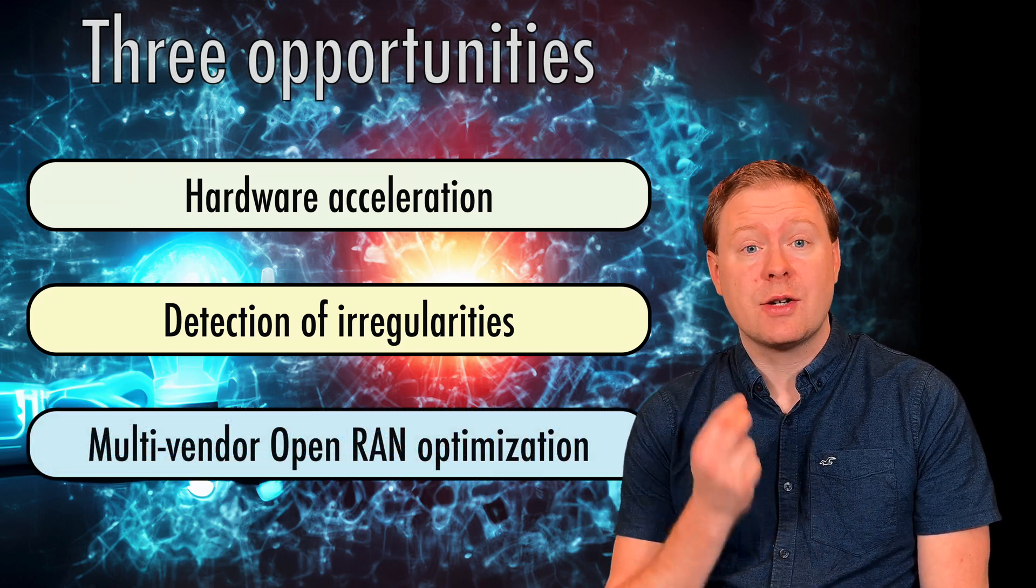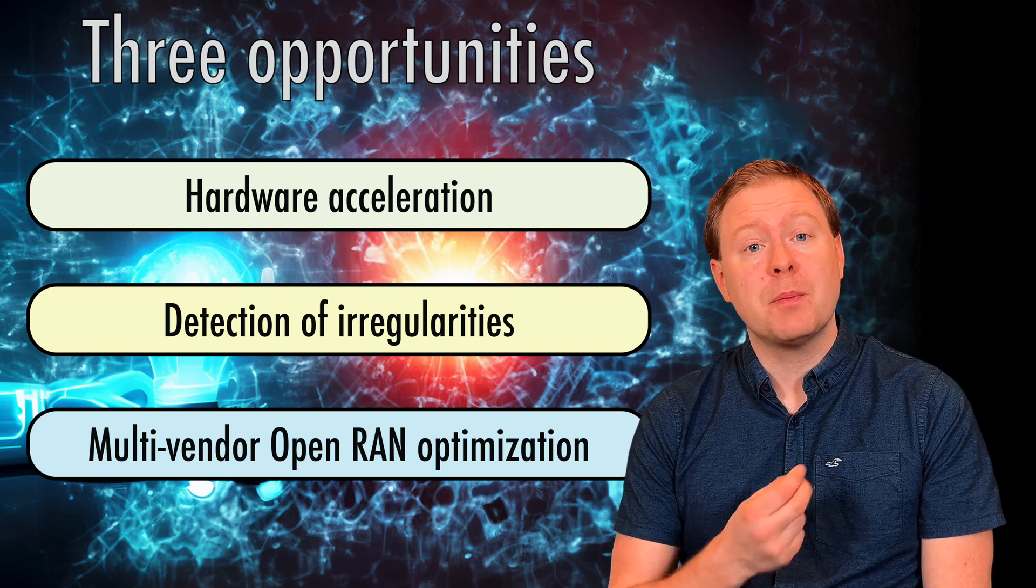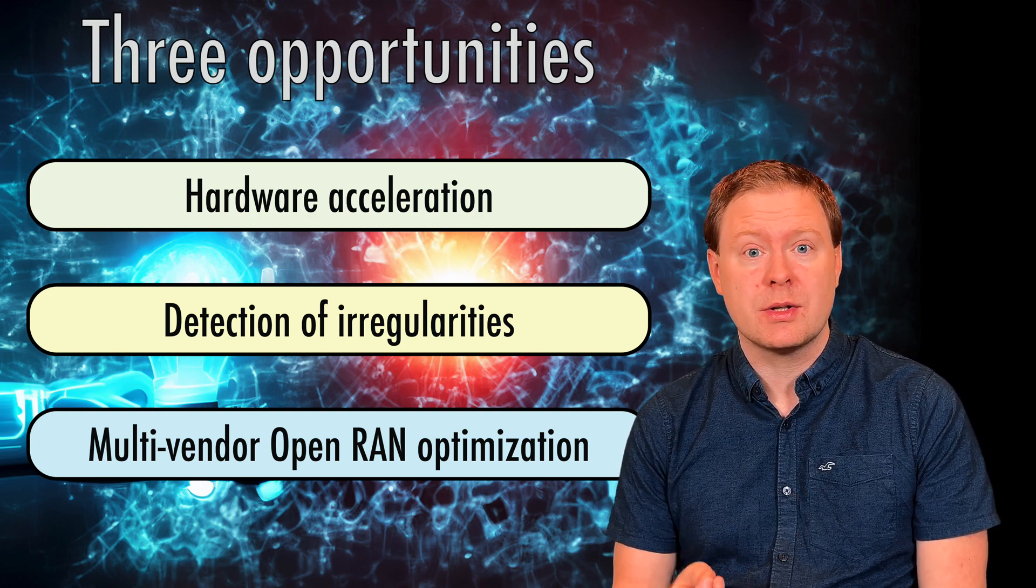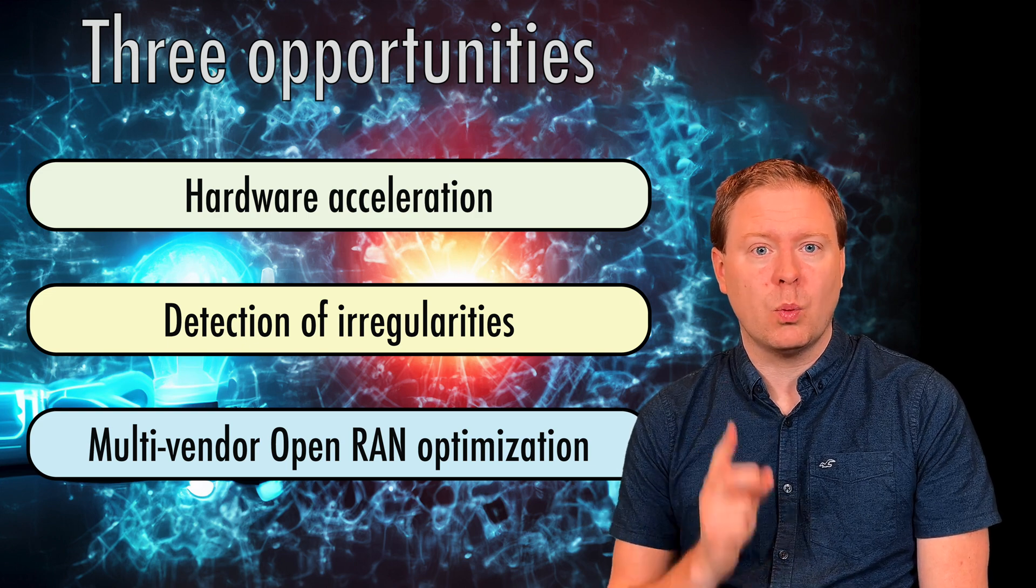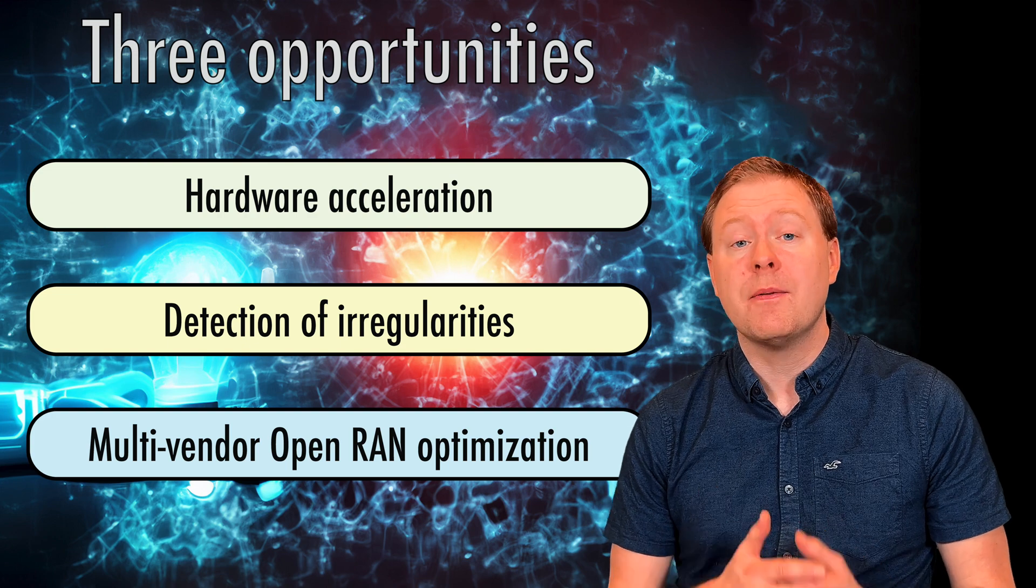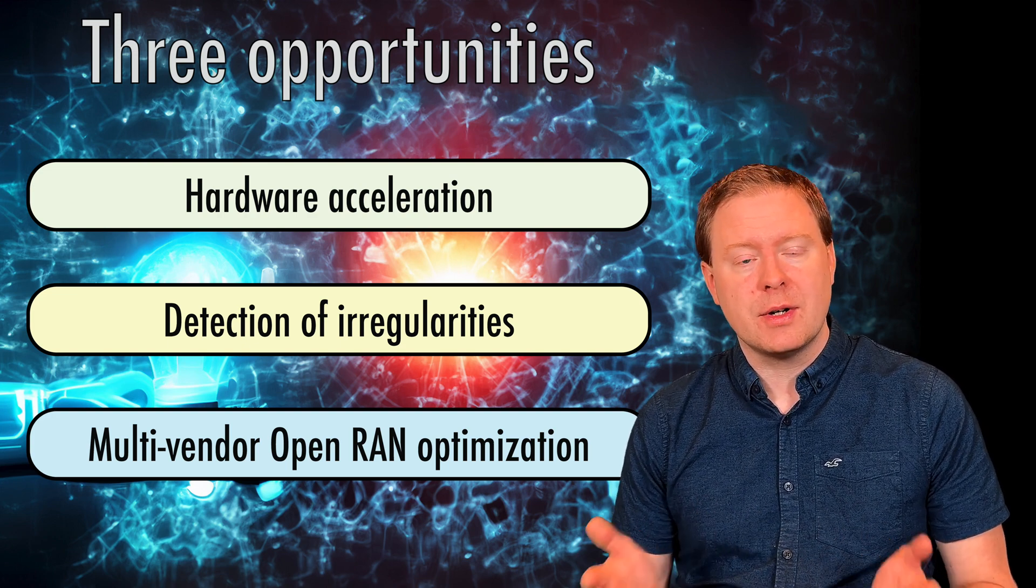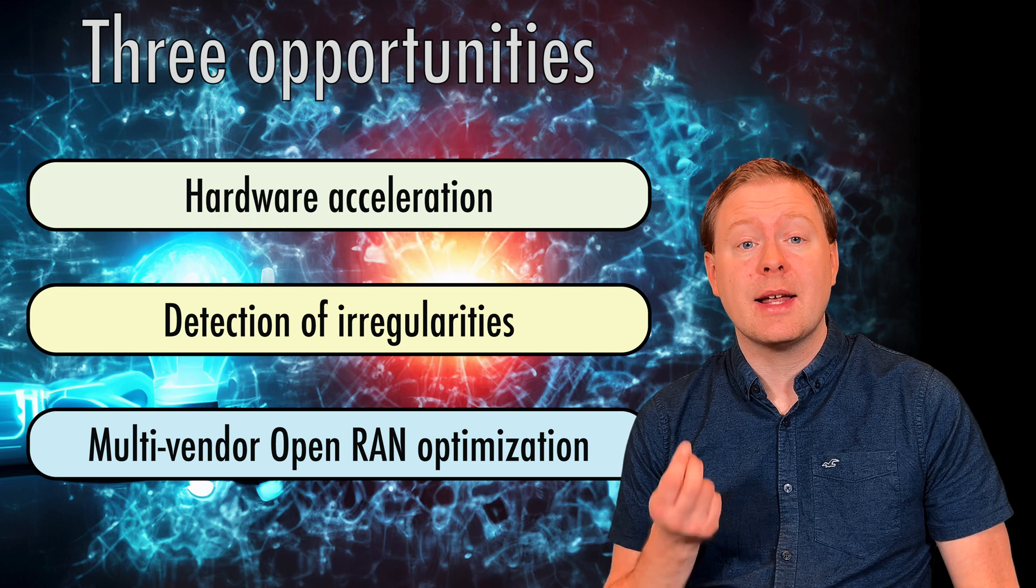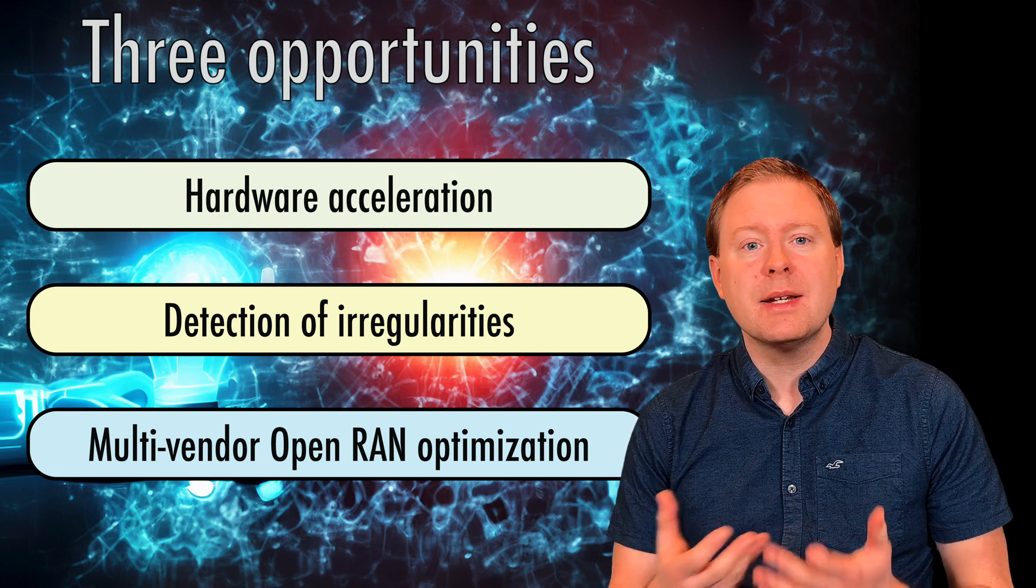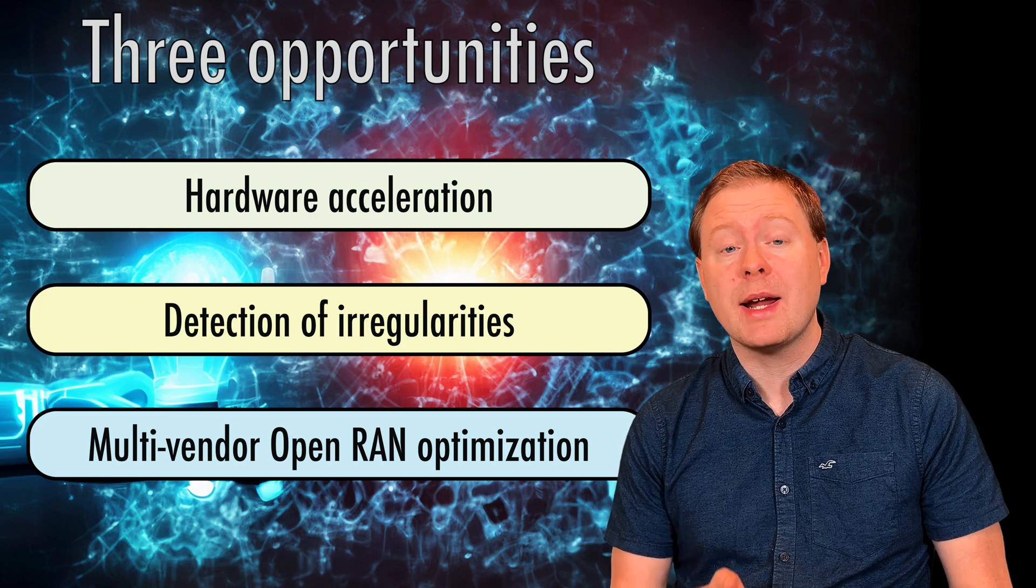The third opportunity has to do with the trend that telecom operators are buying different parts of the network from different vendors. In the past, they only bought them from one vendor and then that vendor could optimize how the different pieces of hardware fit together. When we can't do that in the future, when you have a multi-vendor network, well then AI enables you to let the different pieces of hardware learn how to operate in the best possible way together.